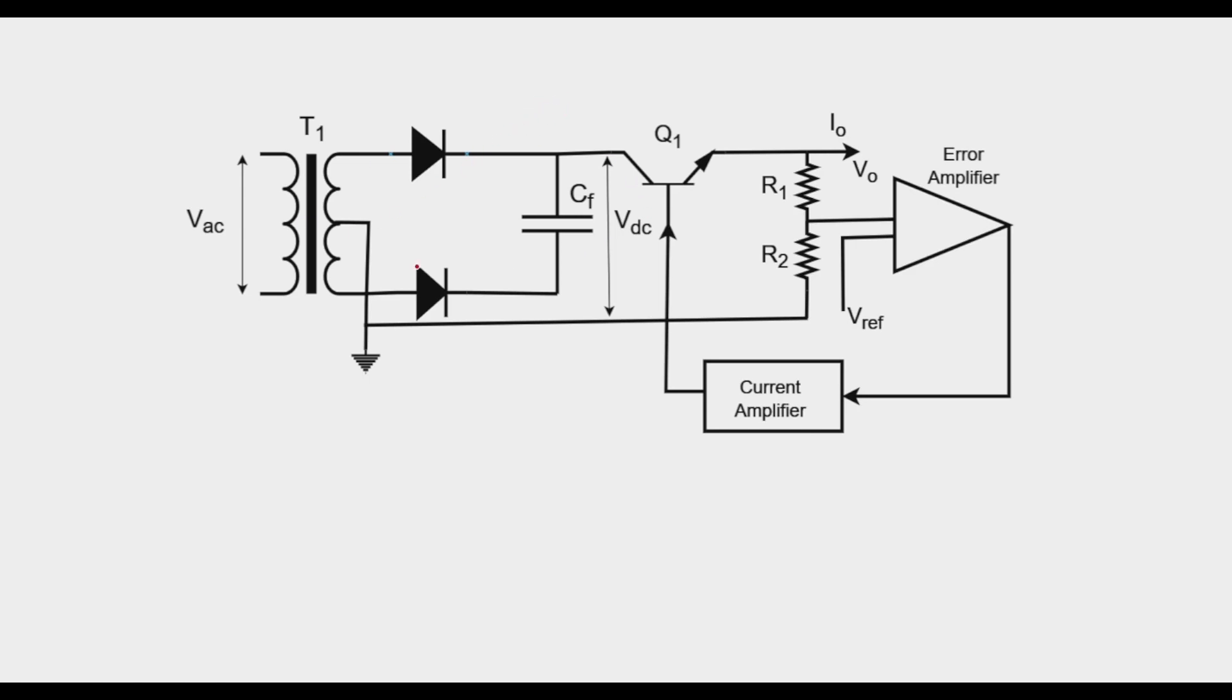This circuit diagram shows the basic topology of a linear regulator. It consists of an AC input which is developed through this isolation transformer T1, followed by a rectifying stage comprising of diodes and this storage filter capacitor CF.